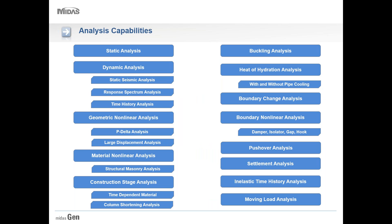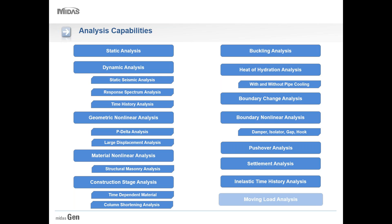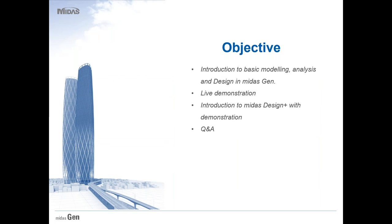Now let's have a quick overview of the analysis capabilities of Midas Gen. From simple static analysis to dynamic analysis, we have non-linear and linear analysis, heat of hydration analysis, stage analysis, and construction stage analysis. Apart from these, there are dedicated analysis modules for P-delta effect and moving load analysis. This webinar focuses on letting you understand the basic modeling, analysis, and design capabilities of Midas Gen.